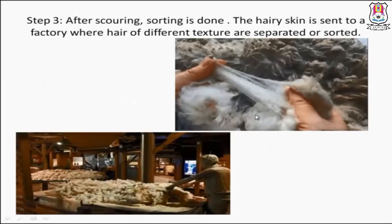Step three: sorting. After scouring, sorting is done. The hairy skin is sent to a factory where hair of different textures are separated and sorted. Good quality hair is separated from lower quality hair — this is done manually in factories.